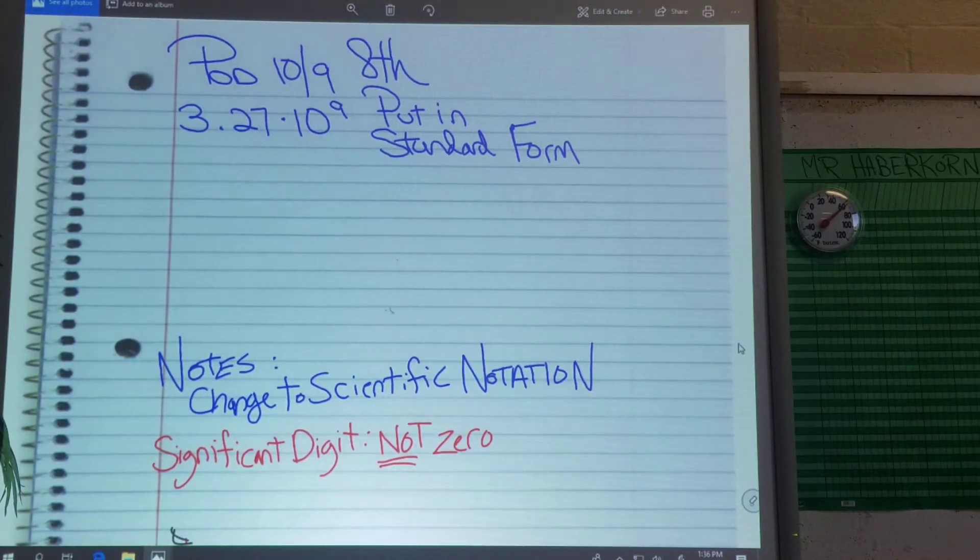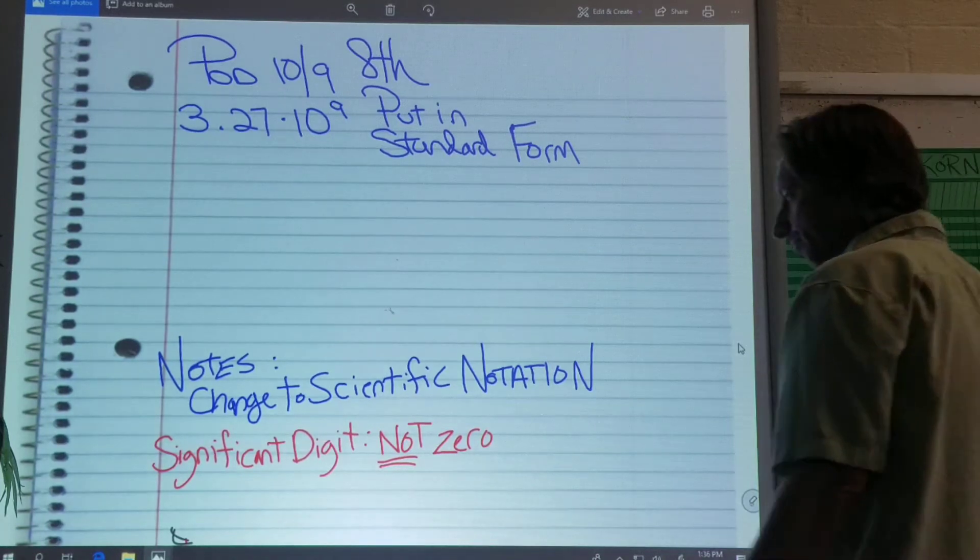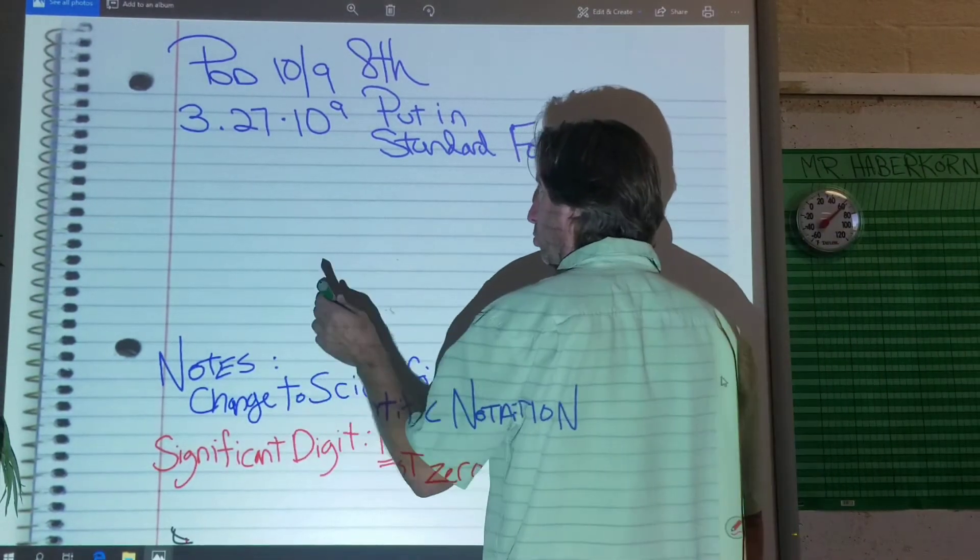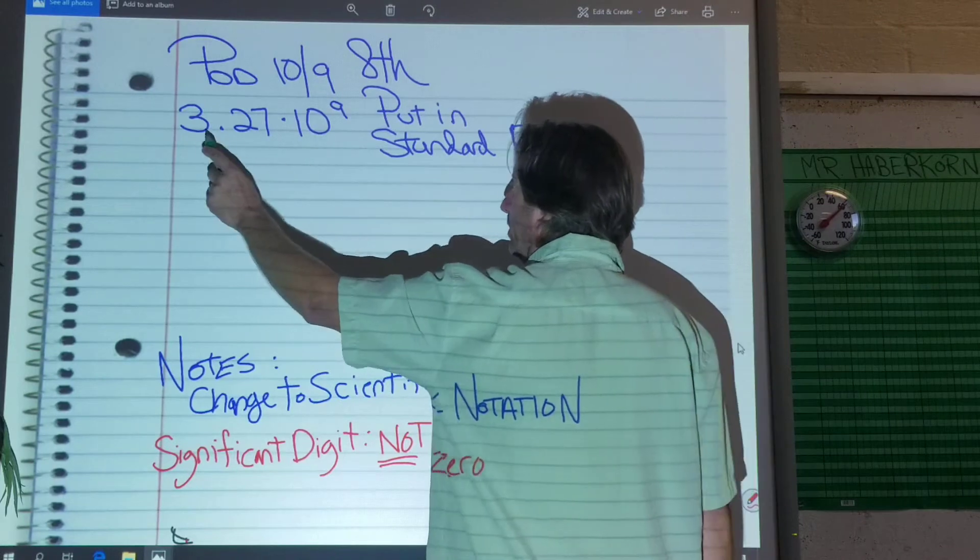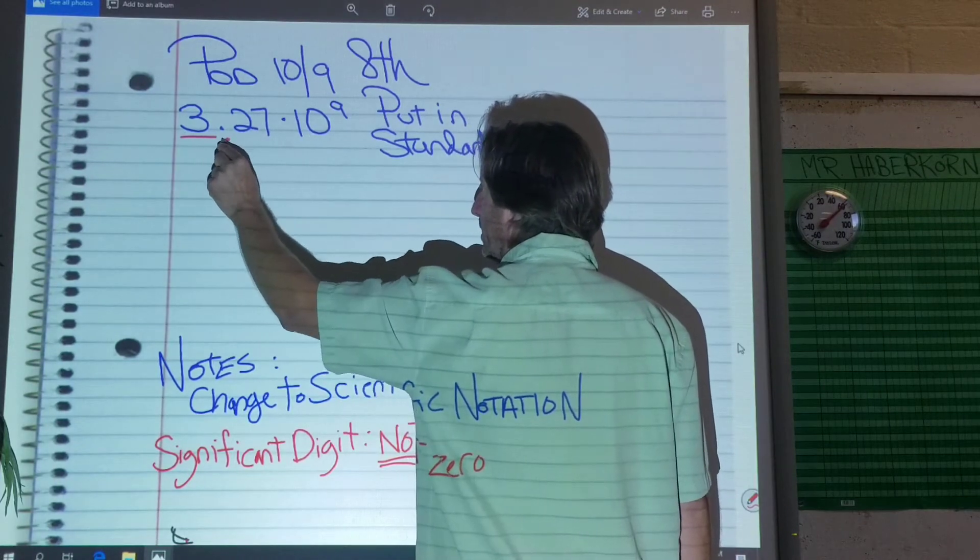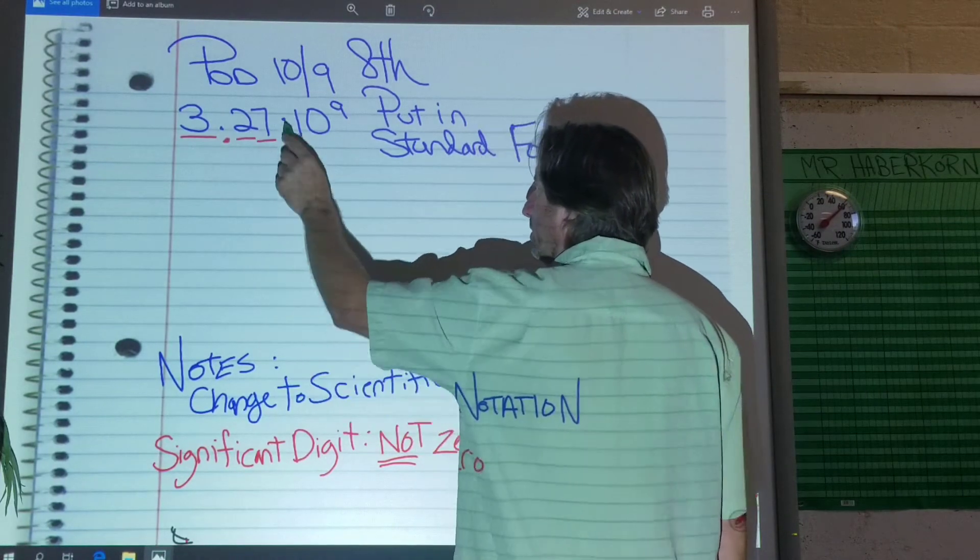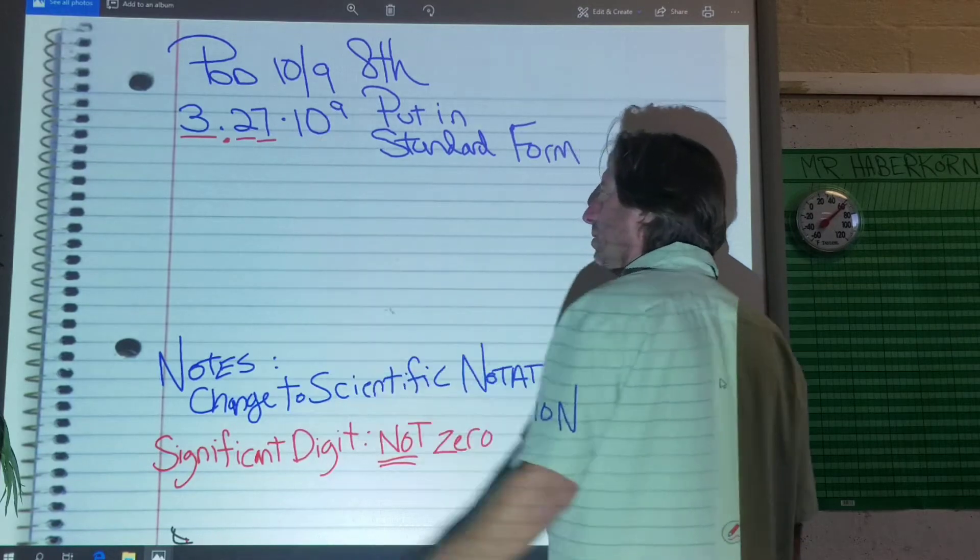Okay, hopefully you hit pause and did your problem of the day. So this is in scientific notation. Notice it has a number, a decimal point, two more numbers, and then it's always times 10 to the something power.